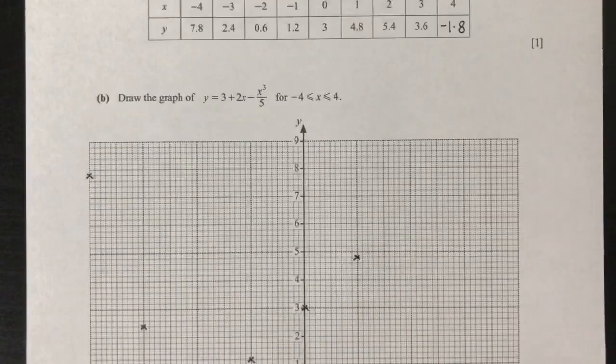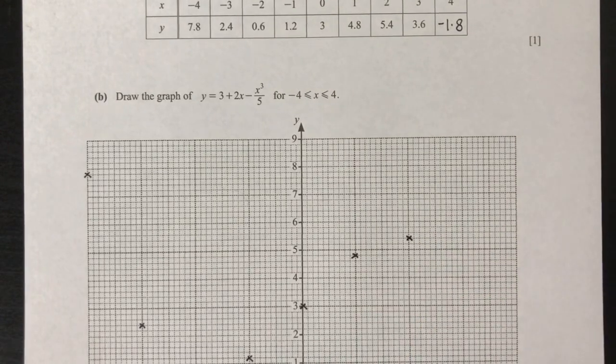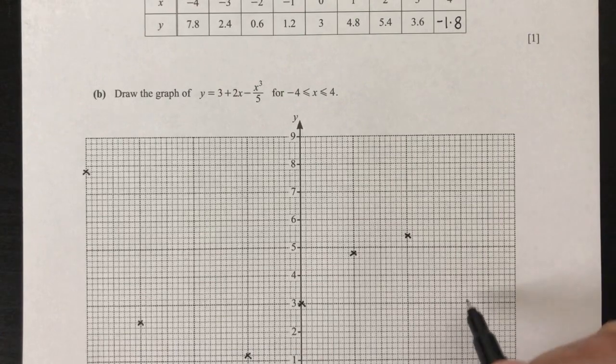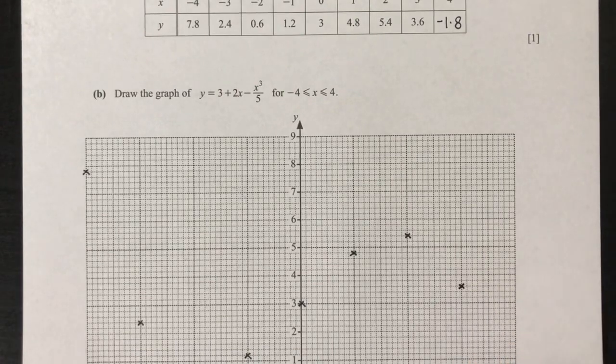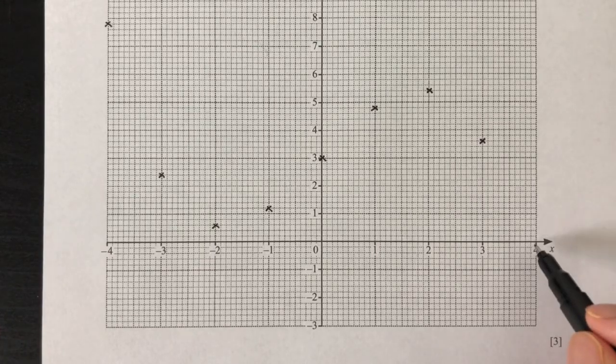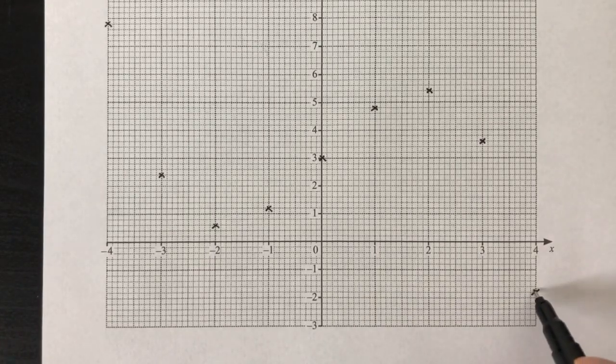Then we have 2, 5.4. 5.4 will be this one. We have 3, 3.6. 3.6 will be somewhere around here. And then finally we have 4 will be minus 1.8. So 4 minus 1.8 will be right here.